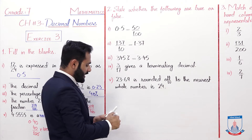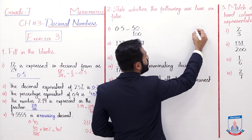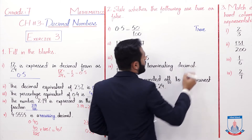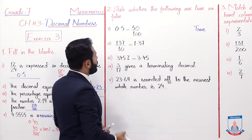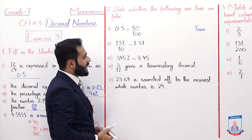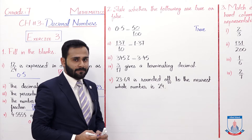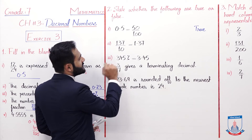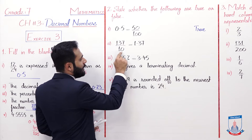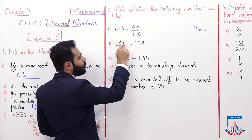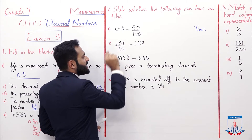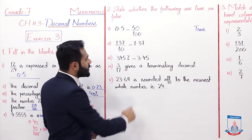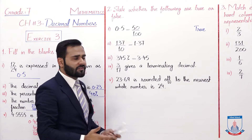This one is true. The second statement: the point should move one digit back, so it should become 13.7, but what is written is 1.37. So this is wrong — False.